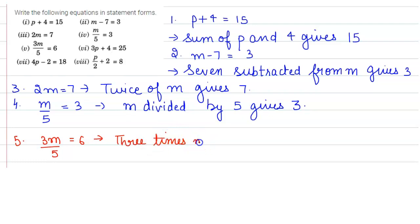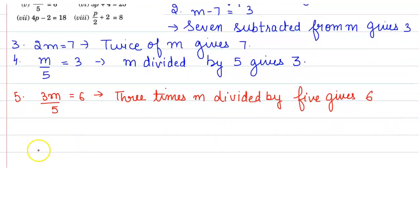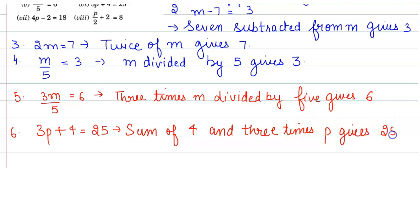Then we have sixth part which is 3P plus 4 is equals to 25. So this can be written as sum of 4 and 3 times P gives 25.